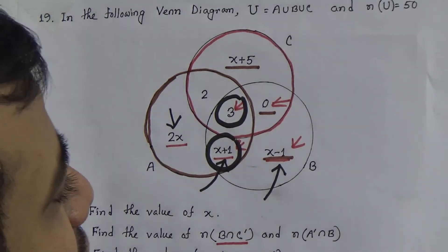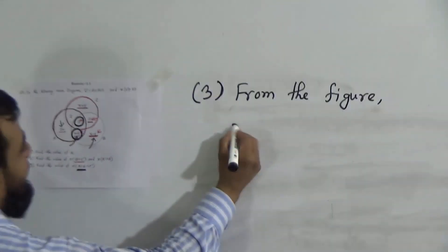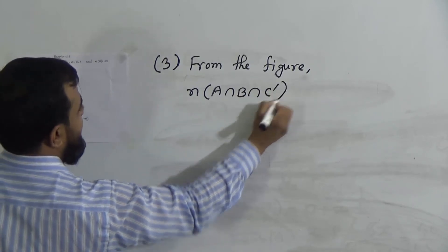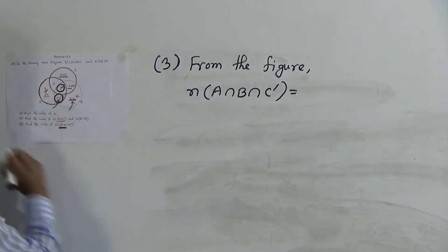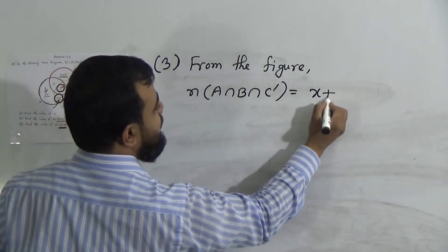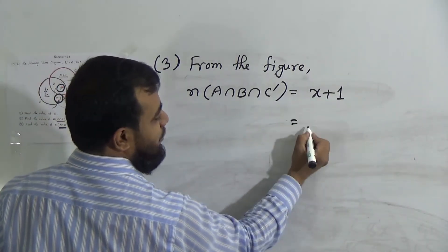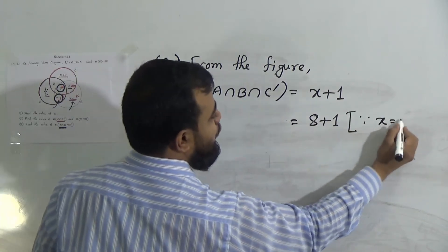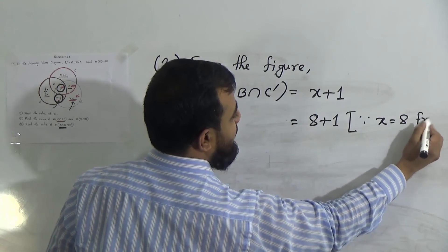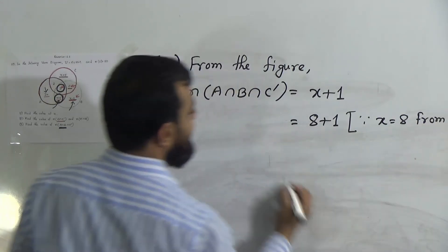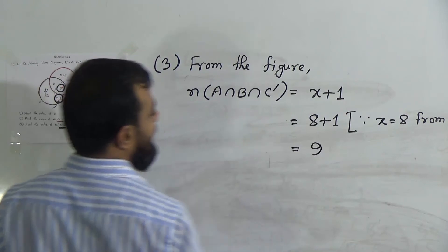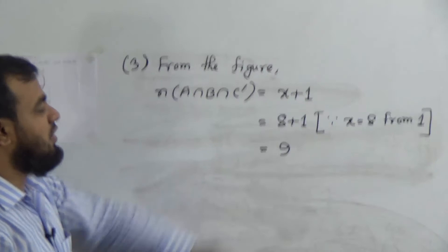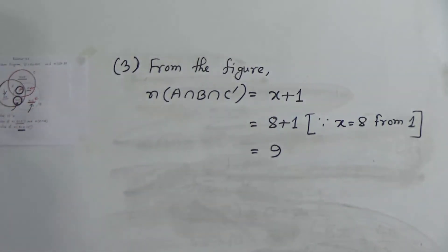From the figure, n(A∩B∩C') equals only (x+1). Since x = 8 from Activity 1, we get 8 + 1 = 9. Therefore, the number of elements of A intersection B intersection C complement equals 9.